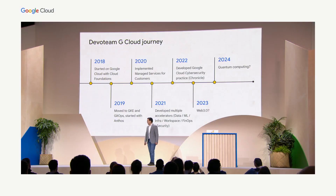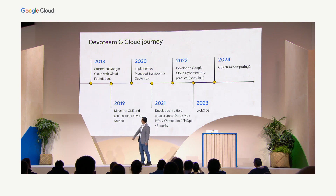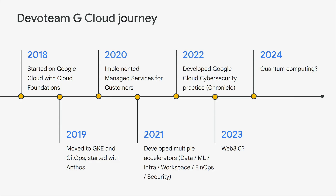A bit of context: in 2018 we started on Google Cloud with what we call Cloud Foundations — building the typical landing zone with different kinds of governance in place. Next, we moved to GKE and utilized that to great effect. We got into GitOps and started with Anthos. And in 2020, that's where we achieved managed services provider status so we could give that kind of extra service to our customers. Next, we built accelerators and different workloads.